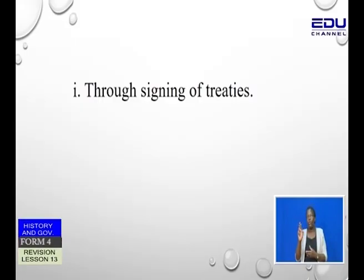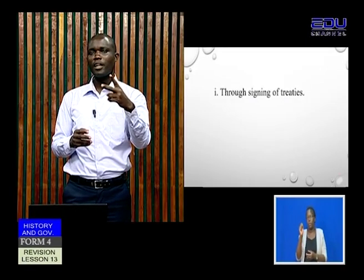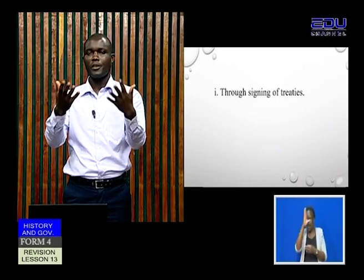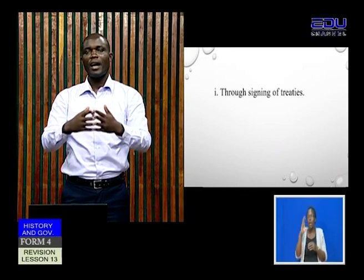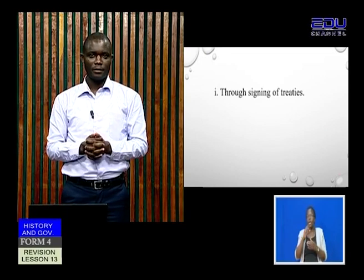The first method they used to acquire colonies in Africa was through the signing of treaties. We need to understand two things here — there were two types of treaties signed in Africa during that period. The first type was treaties between African rulers and the Europeans themselves. For example, we had the Maasai Agreement of 1905 and 1911. In that agreement, the Maasai were put under the British Protectorate — in simple words, the British were supposed to protect the Maasai against other European invaders.